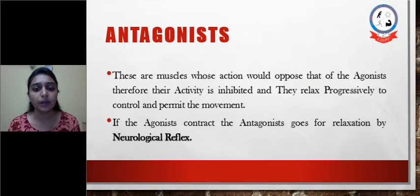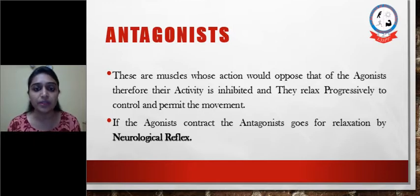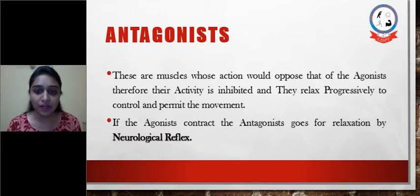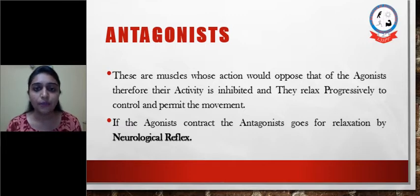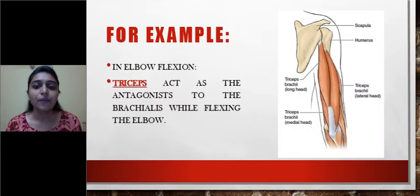Next is antagonist. These are the muscles whose action would oppose that of the agonist. Therefore, their activity is inhibited and they relax progressively to control and permit the movement. So if the agonist contracts, the antagonist goes for relaxation by neurological reflex. The antagonist muscles are opposite to the agonist muscles — when agonist contracts, antagonist relaxes. For example, in elbow flexion, triceps acts as the antagonist to biceps while flexing the elbow. Here in a figure, all the heads of triceps are shown.